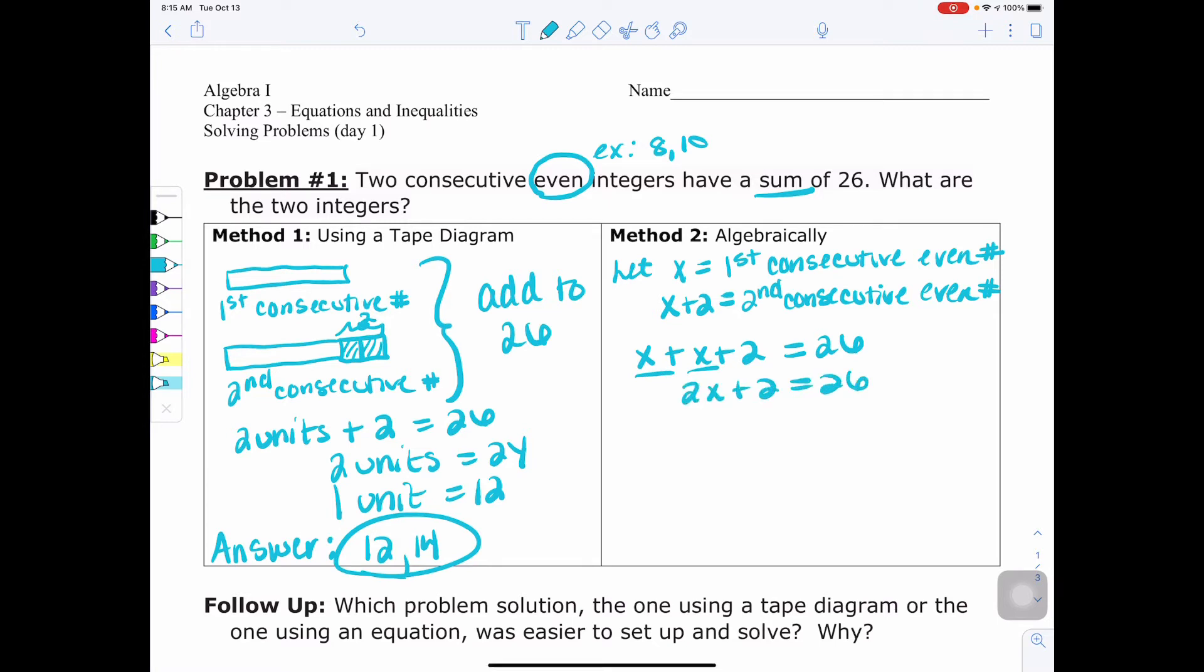We would look for variables on both sides, which we do not have. Then we would go into undoing addition or subtraction. So I'm going to get rid of the two by subtracting two from both sides. And I get two x equals 24. So to get x alone, I'd have to divide by two. And I get x equals 12, which you're going to notice is similar to what you had before. And then the x plus two would be 12 plus two, which would be 14. So my answer is still 12 and 14.